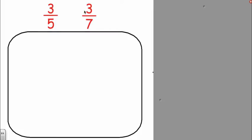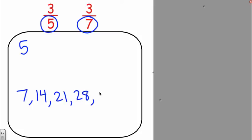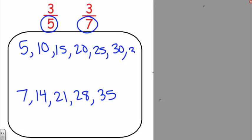So here I have the fractions 3 fifths and 3 sevenths, the denominators are not the same. I'm going to start by finding the least common denominator of 5 and 7 in my box here. I know that 5 goes into 35, so now when I'm listing out my multiples of 5, I'm going to find my match. So the least common denominator for 3 fifths and 3 sevenths is 35.